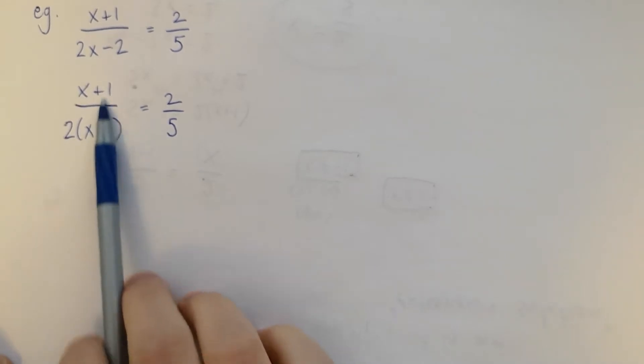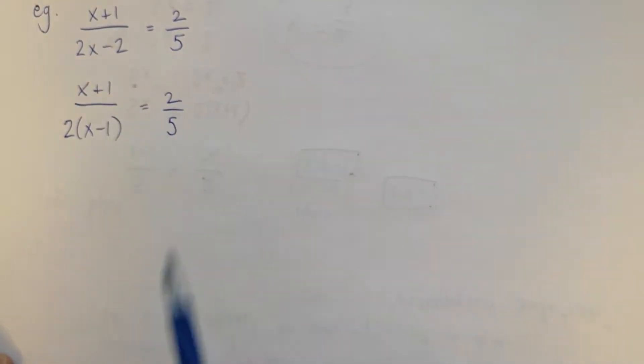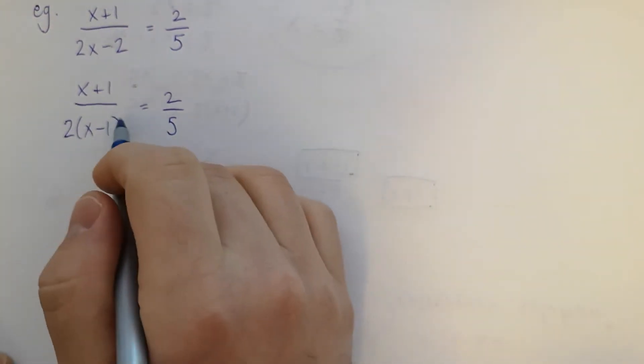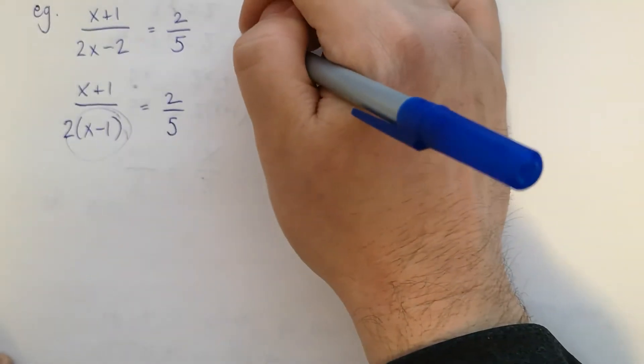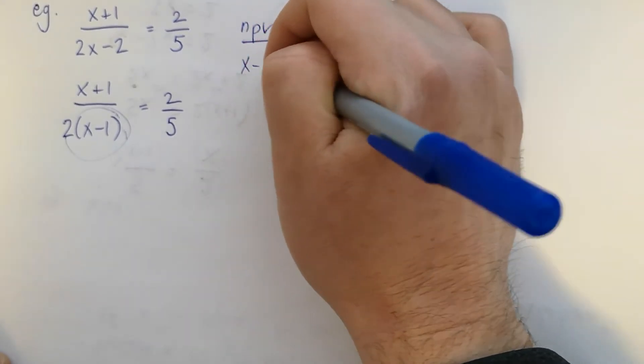We factor because sometimes you can cancel things off. Before you cancel things off, though, you do need to find NPVs. My only NPVs are going to come from that term: x minus one.